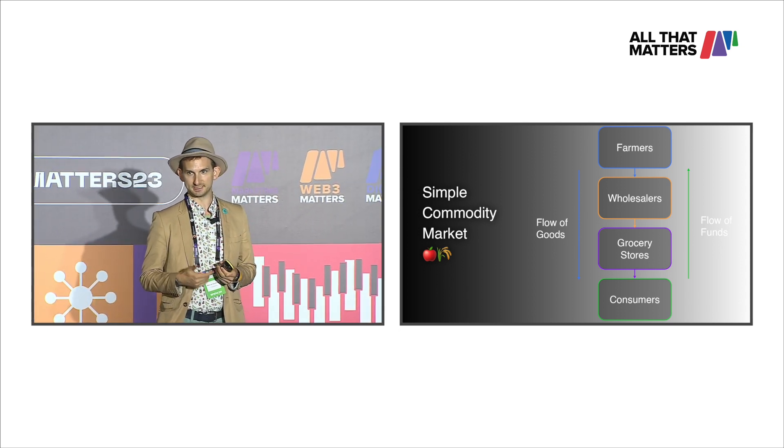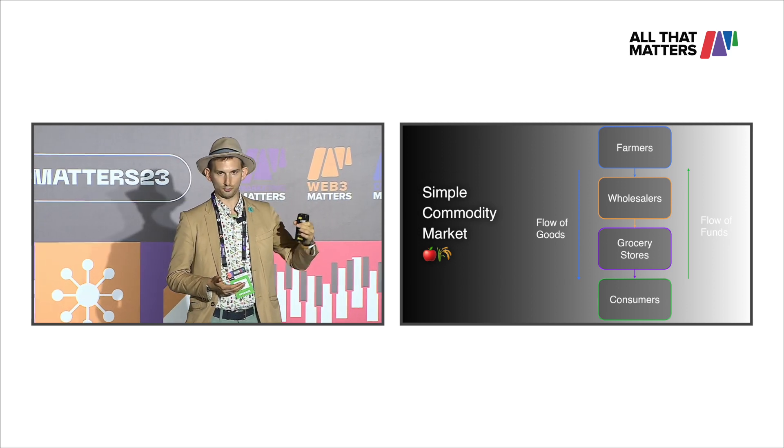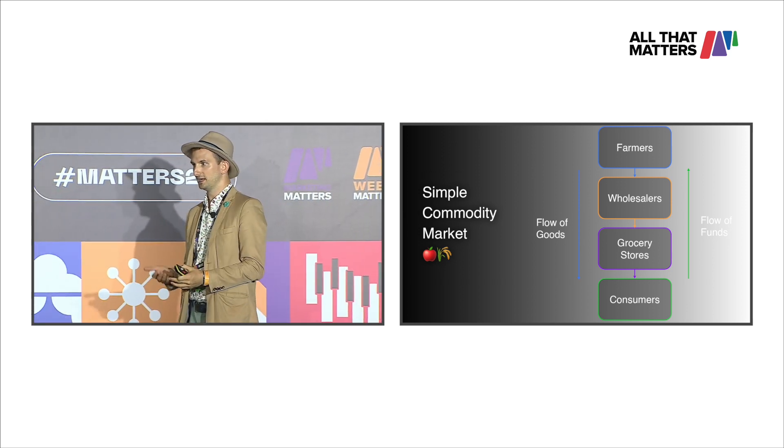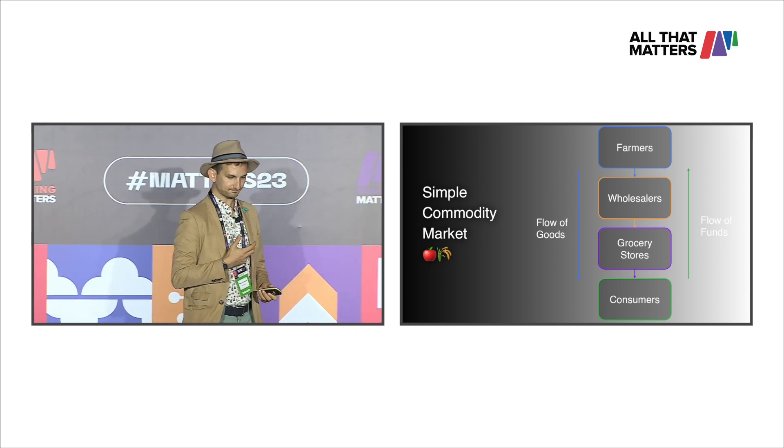A simple example: in a commodity market like fruit, the farmer produces the product, sells it to a wholesaler, the wholesaler sells it to a grocery store, and you as the consumer walk in, buy the apple, and eat it. Compare this with a farmer's market — a disintermediated market. You go to the farmer directly, buy the product from them, and nearly 100% of the money goes to them, maybe minus a small stall fee. The idea behind disintermediation is to more directly connect the end user with the source of supply.